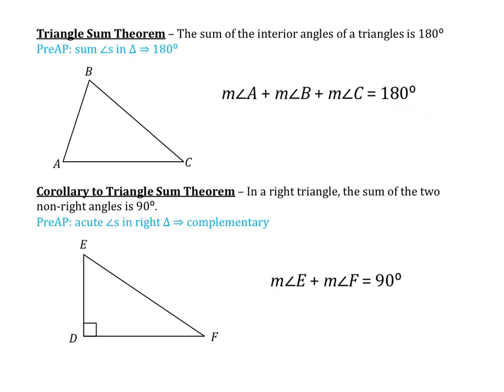Next, we have the corollary to the triangle sum theorem. It says that in a right triangle, the sum of the two non-right angles is 90 degrees. This makes sense because we know there are 180 degrees in a triangle — if we've already spent 90 degrees on the right angle, the two remaining angles must also add up to 90. So in any right triangle, the two non-right angles, in this case E and F, always add up to 90 degrees.